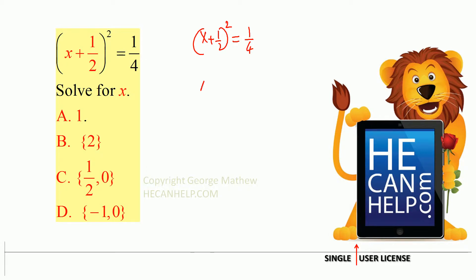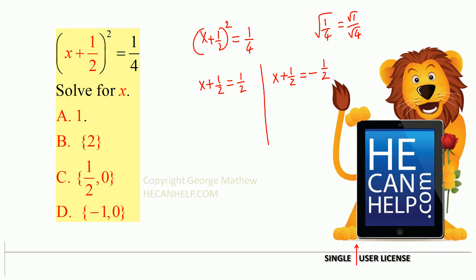And what do we get? x plus one-half is equal to either positive one-half, or x plus one-half is equal to negative one-half. Do not forget: the square root of 1/4 is the square root of 1 divided by the square root of 4, which is one-half. So we have plus one-half and minus one-half. Subtract one-half from both sides.